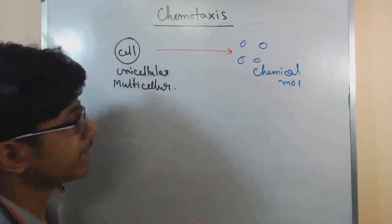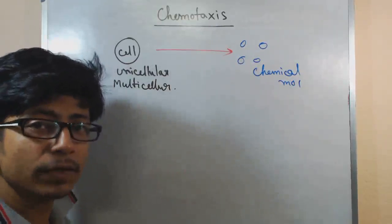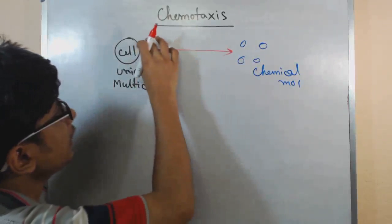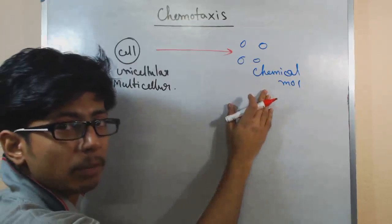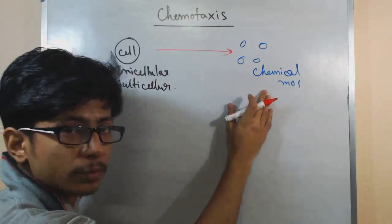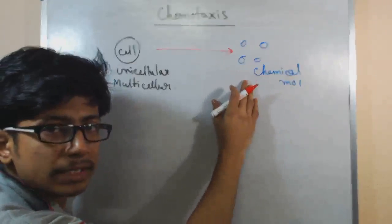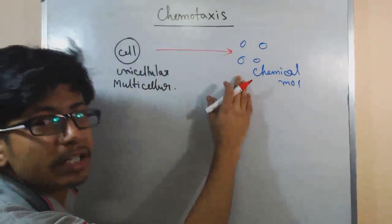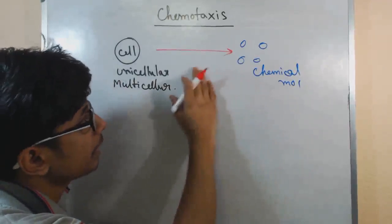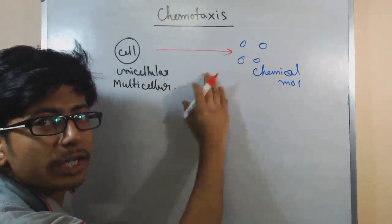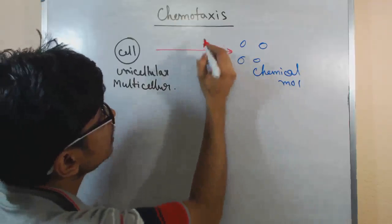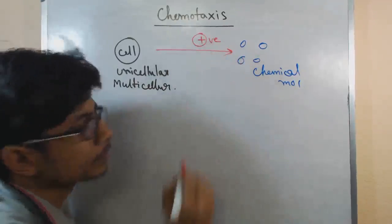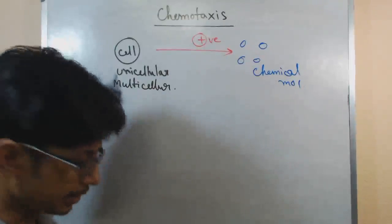Now in this case, there are two types of chemotaxis possible. One is that the cell is attracted towards the chemical molecule. This kind of chemotaxis is called chemo attraction — also called positive chemotaxis.